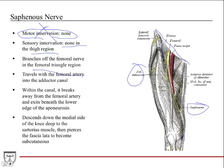Here's sartorius down here, here's adductor longus. The saphenous branches off right here in the femoral triangle region, then travels with the femoral artery into the adductor canal. Within the canal, it actually breaks away from the femoral artery — the femoral artery exits the canal in the adductor hiatus in the adductor magnus tendon. The saphenous nerve breaks away and exits beneath the lower edge of the aponeurosis coming off of vastus medialis, then descends down the medial side of the knee.